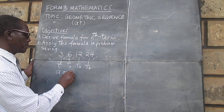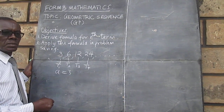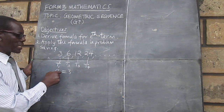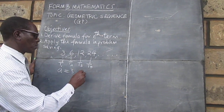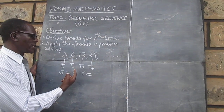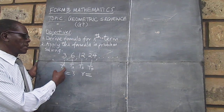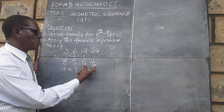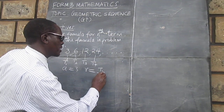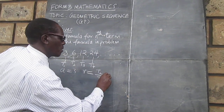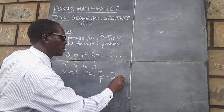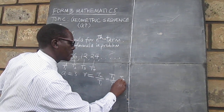The first term in our case here is 3. We will be using A as the first term. Now let's get the constant ratio. We normally use a small letter R, and we get that by either dividing the second term by the first, the third term by the second, or the fourth term by the third. We can say the constant ratio is the second term divided by the first. It can also be gotten from the third divided by the second, or the fourth divided by the third.